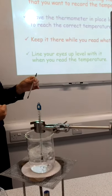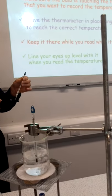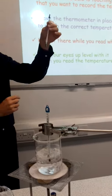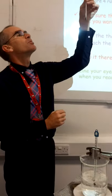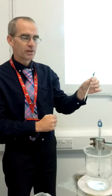And the fourth rule is to try to line your eyes up level with it when you're reading the temperature. Because just holding it up so that you're looking up at it or holding it down and looking down at it can make several degrees of difference.